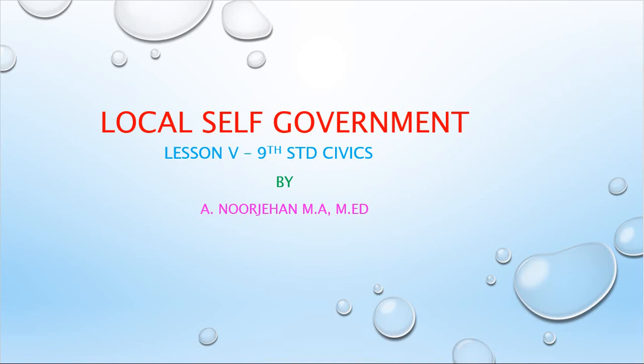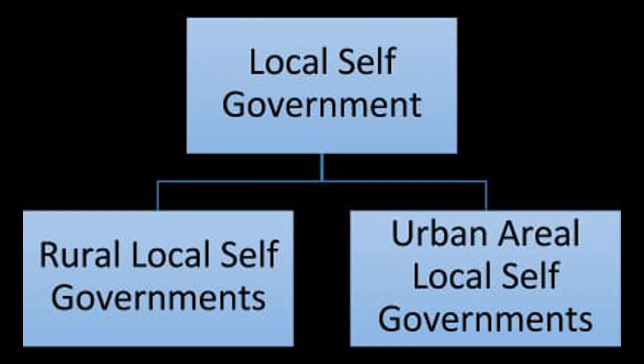What is local self-government? It means the institution that looks after the administration of an area or small community like a village, town, or city. Local self-government operates at the lowest level of society — it works at the grass root level, close to the people, touching their everyday life.